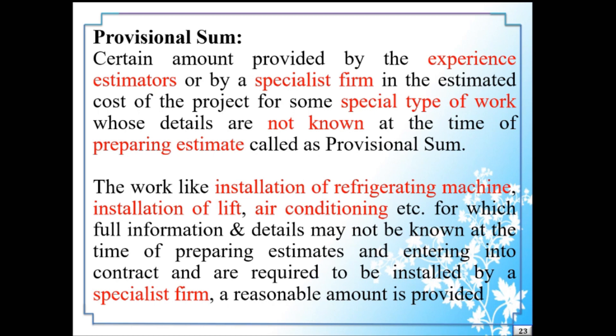Next one: Provisional Sum. A certain amount provided by experienced estimators or by a specialist firm in the estimated cost of the project for some special type of work whose details are not known at the time of preparing the estimate is called a provisional sum. If there is some special type of work in the project whose details are not known at the time of estimating, then for that work, experienced estimators or a specialist firm provide a certain amount, and that certain amount is called a provisional sum.